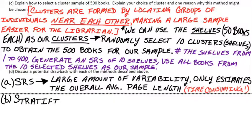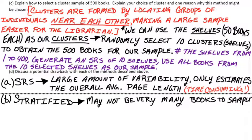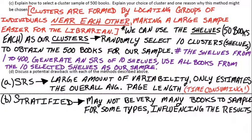For the stratified sample, a potential drawback is that if we go to every single type — biography, history — there may not be many books to sample from for some types. To be fair, we had to sample the same number from each, which may skew results when some groups are small. Depending on the types used as strata, some may be very small groups that strongly influence results.